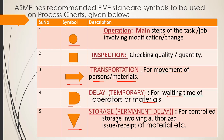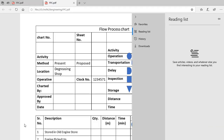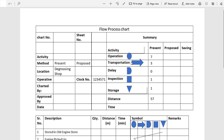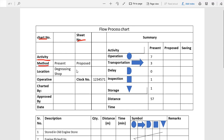Now we are going to learn how flow process chart is drawn with the help of these five symbols. Here is the template of the flow process chart. In this template we can see there is a description section. We write chart number, sheet number, and the activity we want to include. We also write the method: present or proposed.